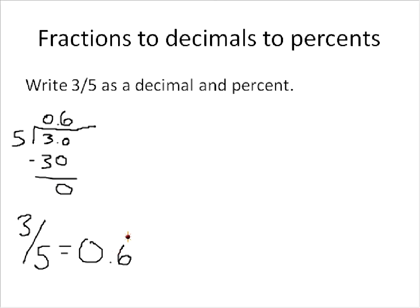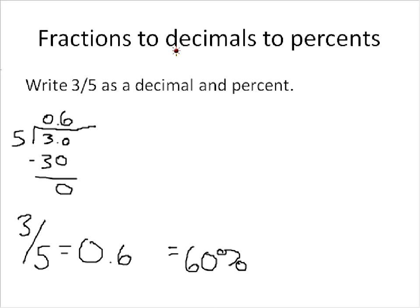Now that we've converted our fraction into a decimal, we are going to convert our decimal into a percentage by moving the decimal place over 2, and we have to have our placeholder of 0. So 0.6 is equal to 60%. That is one way to make a fraction to a decimal to a percentage.